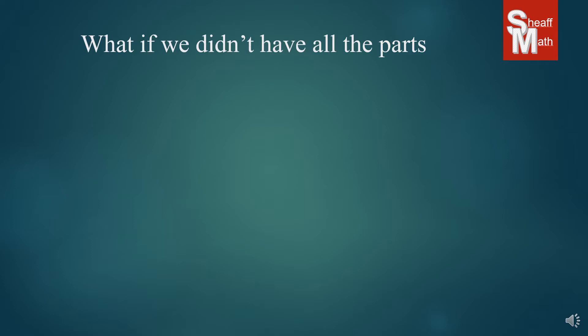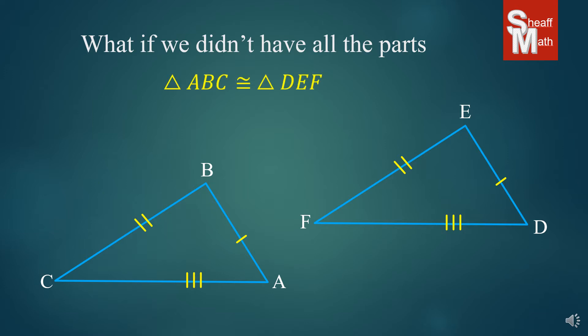Now, what if we didn't have all the parts of two triangles? Suppose you were given these two triangles, and you just had three corresponding sides that were congruent, but you didn't know anything about the angles. Do you think that this would be enough to prove that they were congruent? Well, let's take a look at the triangle a little bit closer, because they are congruent. Let me show you why.